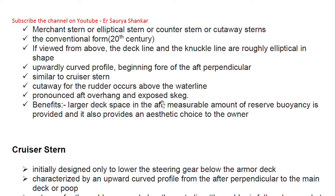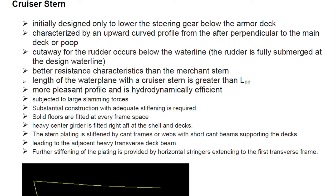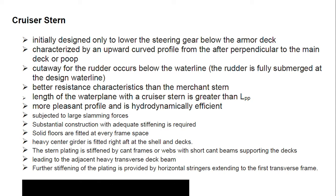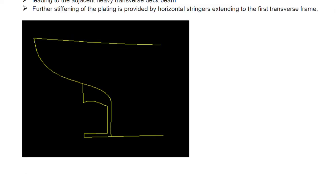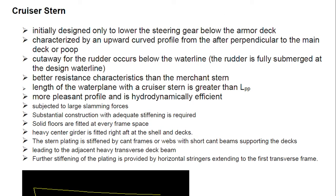The cruiser stern was initially designed only to lower the steering gear below the armor deck. It is characterized by an upward curl profile from the after perpendicular to the main deck or poop deck. The cut-away for the rudder occurs below the water line — unlike the elliptical stern where it is above. It has better resistance characteristics than the elliptical stern, since the elliptical stern was modified into the cruiser stern, which was then modified into the transom stern.